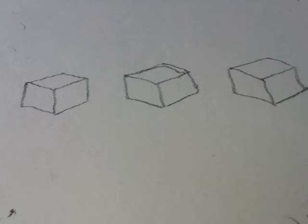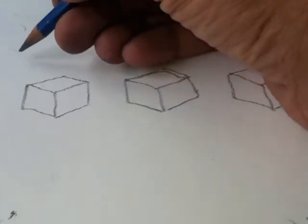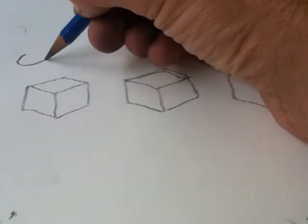In order to make things look realistic and to be able to do this, you need to understand a little bit about light and how light affects objects. I want you to imagine there is a light shining on that cube.